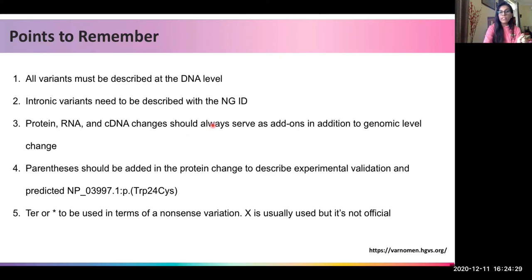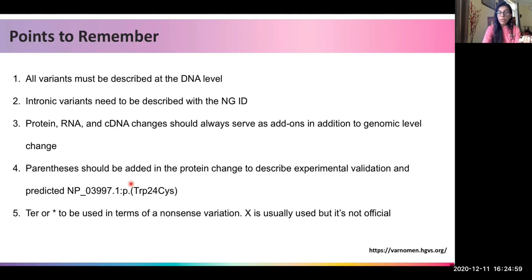Parentheses should be added in protein changes to describe predicted versus experimentally validated changes. For example, if an NP ID shows tryptophan-24 changed to cysteine in parentheses, it means the nucleotide change was identified by sequencing but the protein change has not been experimentally confirmed — it is only a predicted protein change. If a stop codon is introduced, the HGVS standard recommends using 'Ter' or an asterisk to denote a nonsense variation, not 'X' which is sometimes seen in publications but is not in the official guidelines.